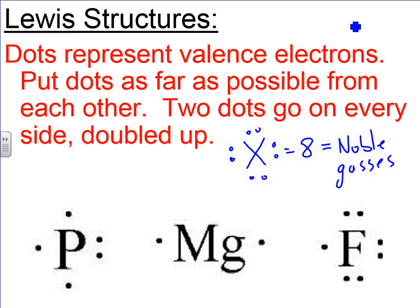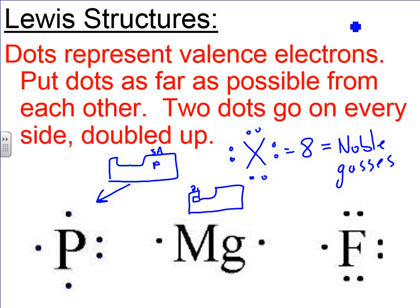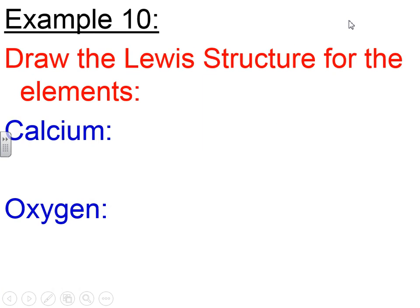Now let's do the same thing for three other elements: lithium, oxygen, and aluminum. Find lithium on the periodic table — that's element number 3. Since each element wants to be like the closest noble gas, ask yourself: which noble gas is closest to lithium? Lithium is element number 3, and the closest noble gas is element number 2, helium. Helium has two electrons and lithium has three, so lithium will lose an electron — going from three down to two. When lithium loses an electron, it becomes positively charged because electrons are negative, and when you remove a negative you get a positive. So lithium will have a plus 1 charge.